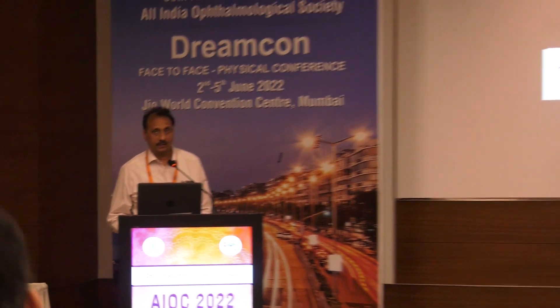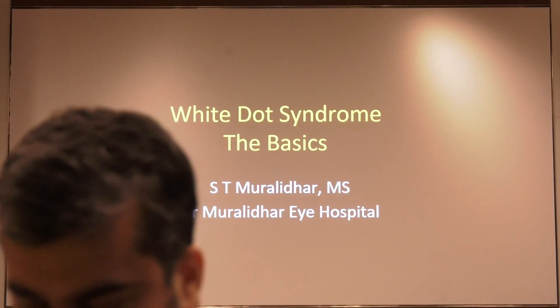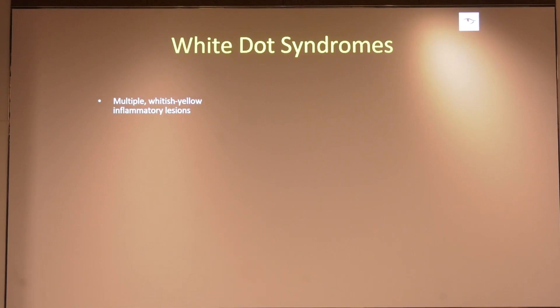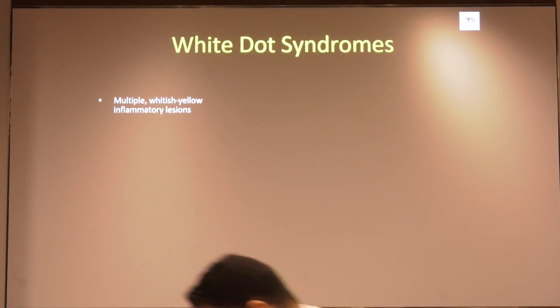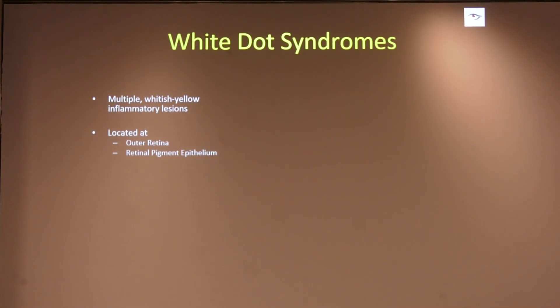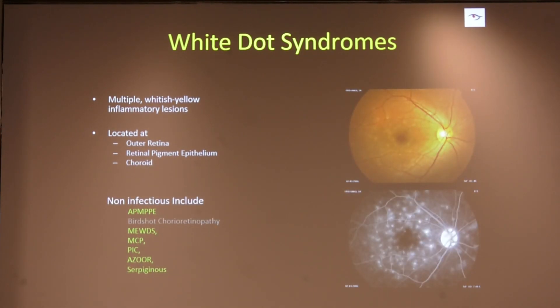Good afternoon to everyone and thank you panelists for this opportunity. I was given a curious topic of yellow spots and dots around the macula — a heterogeneous group. My task became easier when the first speaker talked about dot hemorrhages and the second speaker filtered things further, so I could focus on white dots, which are more non-infectious. These are multiple whitish-yellow inflammatory lesions located in the outer retina, the retinal pigment epithelium, and the choroid. I will handle only the non-infectious group, which includes placoid epitheliopathy.